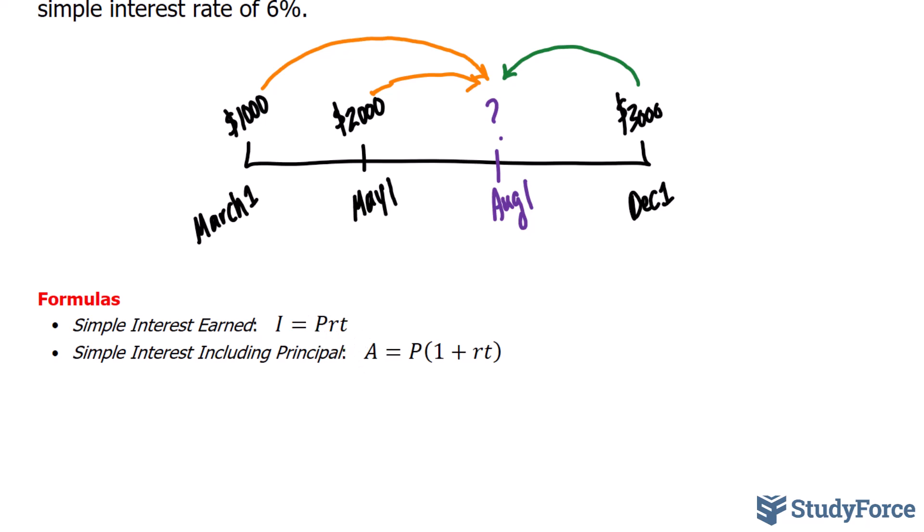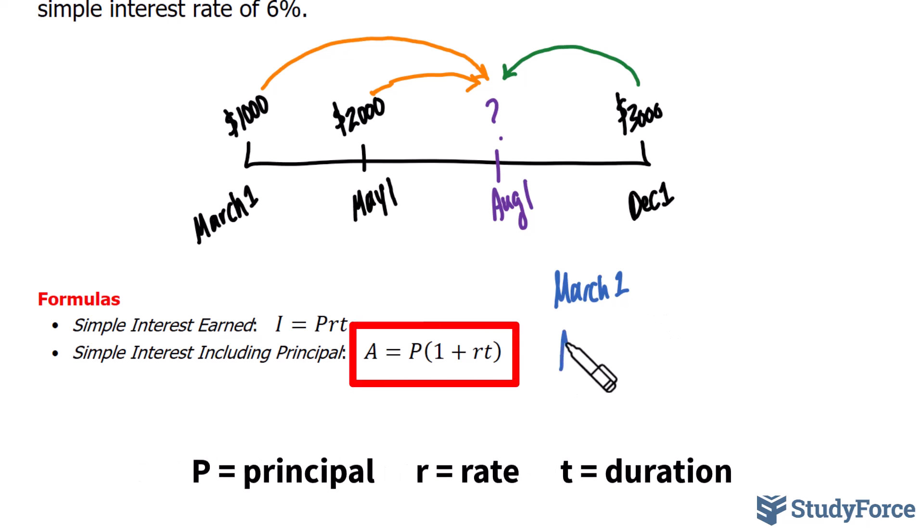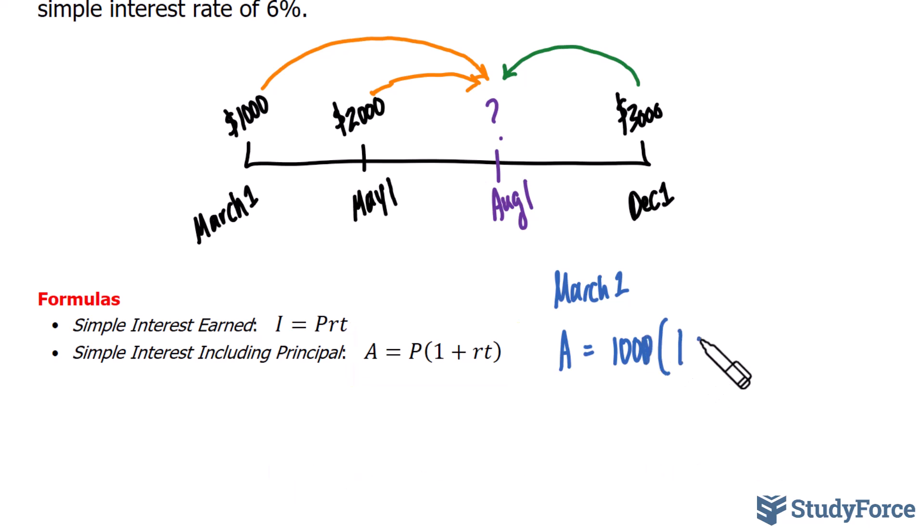So, how do we find the future value of that March 1st payment and of that May 1st payment? We'll begin with March 1st. To find out how much $1,000 will mature to, we'll write down A = $1,000 × (1 + 0.06). And the interest rate is 6% annually. Converting that to decimal form, we have 0.06.